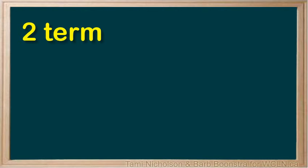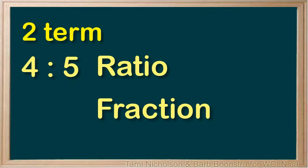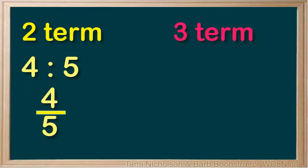A two-term ratio can be expressed as a ratio or as a fraction: 4 is to 5, or 4 fifths. A three-term ratio can only be written in ratio notation — for example, 5 to 6 to 1. Notice that all of the ratios are expressed in lowest terms.